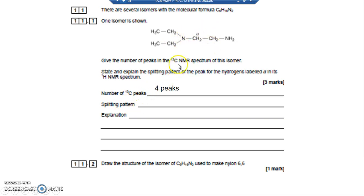Splitting pattern of the hydrogens labeled alpha here. Well they haven't got any hydrogens to the left, but they have got hydrogens to the right, they've got two hydrogens to the right.